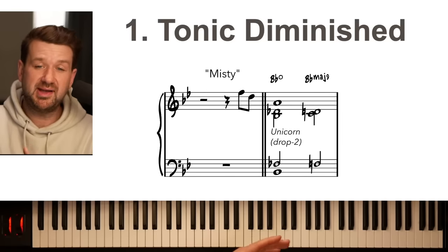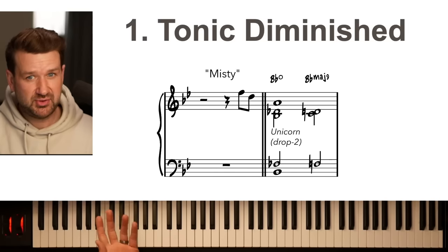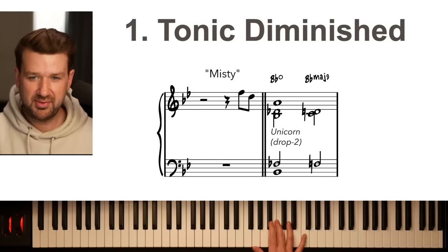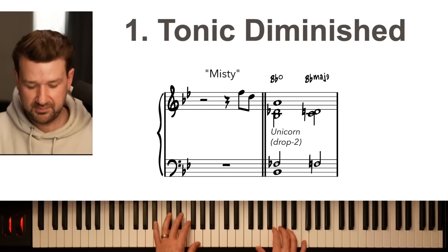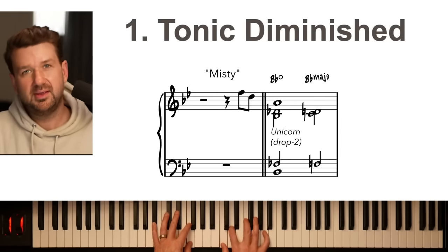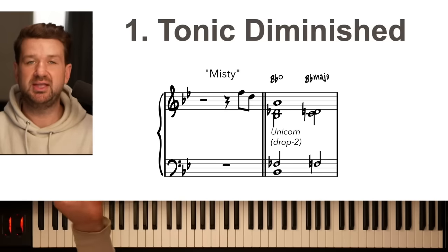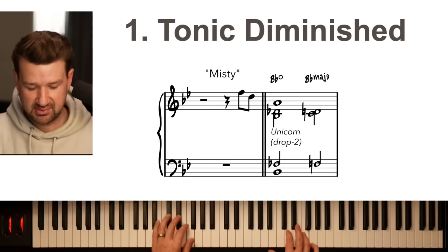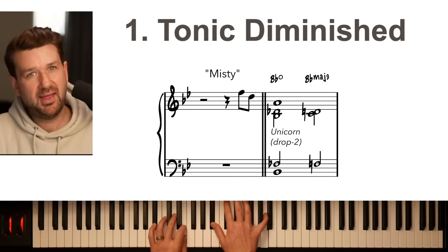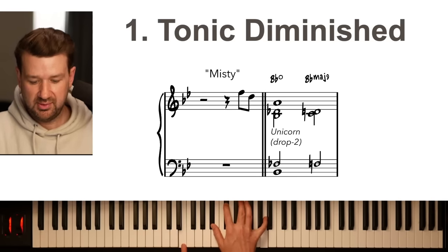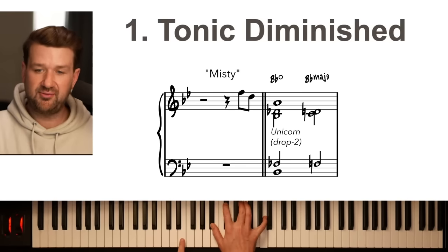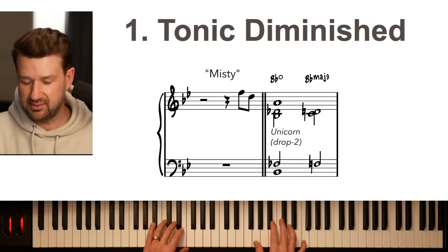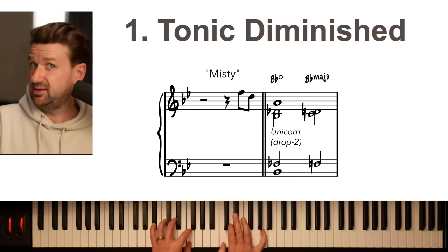The next way that you hear the tonic diminished is as a substitution. You'll often hear this on the tune 'Misty,' but you hear this in other tunes as well. The tune 'Misty' starts with — some people play it just straight major seven, but a lot of folks play some kind of tonic diminished. Here we have the unicorn shape in a drop two, so I'm taking the second note from top — that F-flat — and dropping it to the left hand just to widen out the voicing. And then we resolve it to itself.